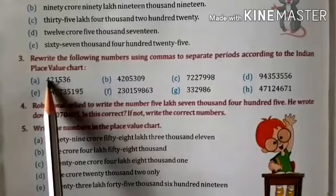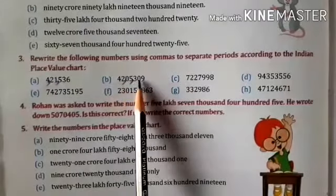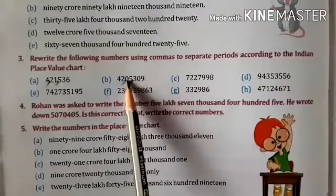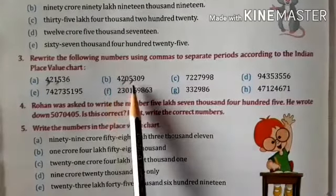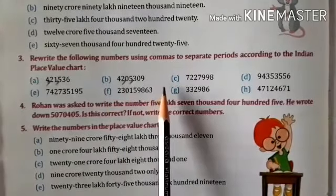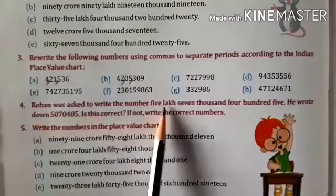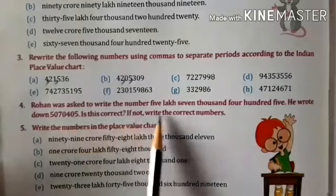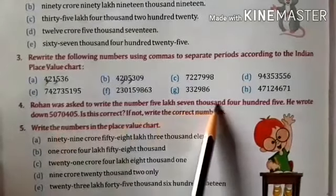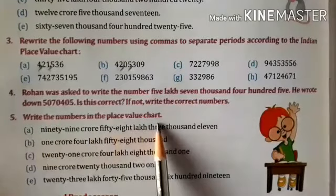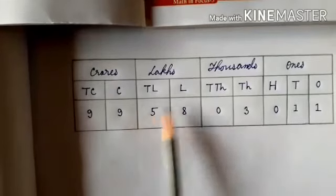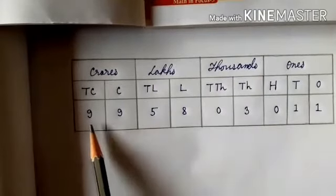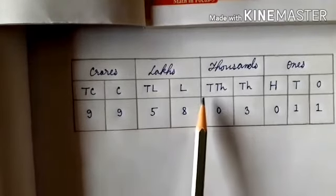Ones, tens, hundreds — this is the ones period. Thousands, ten thousands — this is the thousands period. Lakhs, ten lakhs — this is the lakhs period. So we have to separate the periods by giving commas. Next, Rohan was asked to write the number five lakh seven thousand four hundred five, but he wrote fifty lakh seventy thousand four hundred five. This is wrong — write the correct number. Next, write the numbers in the place value chart. Make the place value chart, write the places and periods properly, then put the digits according to their places. For example: ninety-nine crore fifty-eight lakh three thousand eleven.